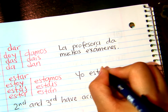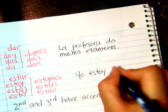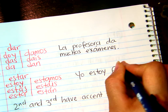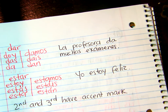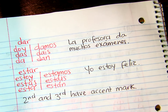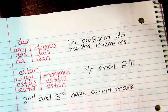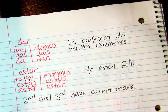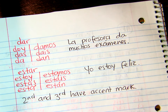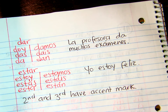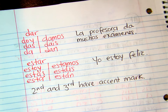Yo estoy feliz — I am happy. So these verbs are very irregular, so you have to remember them as they are. Make sure you go over this conjugation.